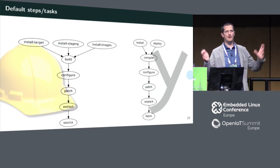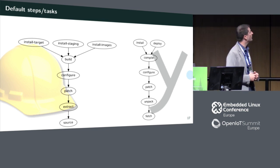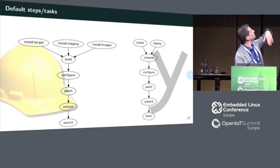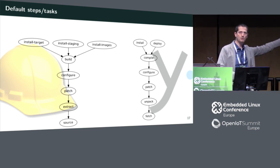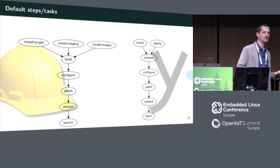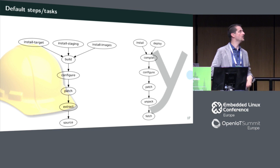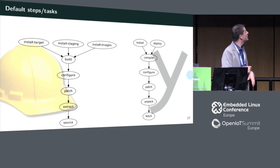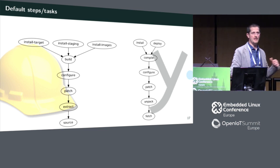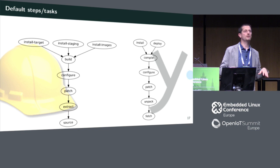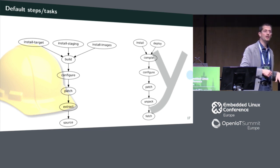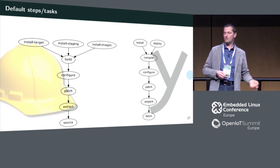The default steps or tasks are organized very similarly in the two build systems, differing mainly in naming — for example, 'source' becomes 'fetch'. The build step in Buildroot means run the compilation itself before installing, while in Yocto 'build' is a special task meaning build everything related to a package. Installing has two different steps in Buildroot — install to staging and install to target rootfs — while Yocto manages this internally with one install step. What Yocto calls 'deploy' is equivalent to 'install images' in Buildroot.